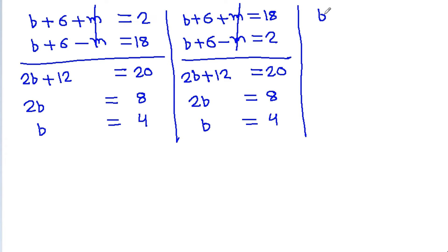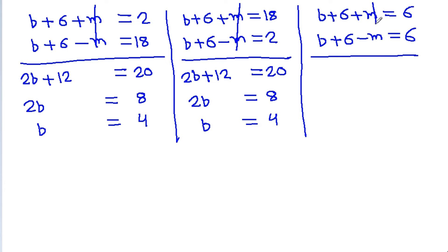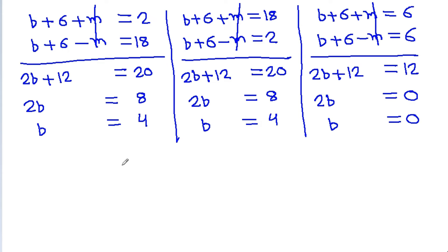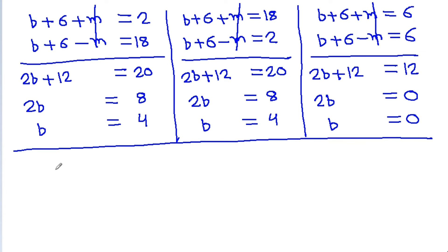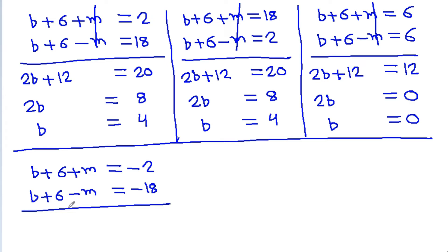Case 3: b+6+m=6 and b+6−m=6. Adding both equations, m cancels: 2b+12=12, so 2b=0, giving b=0.